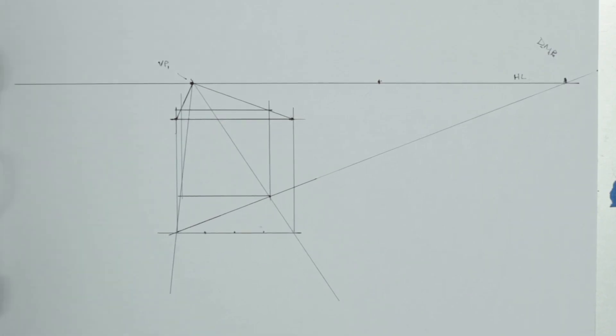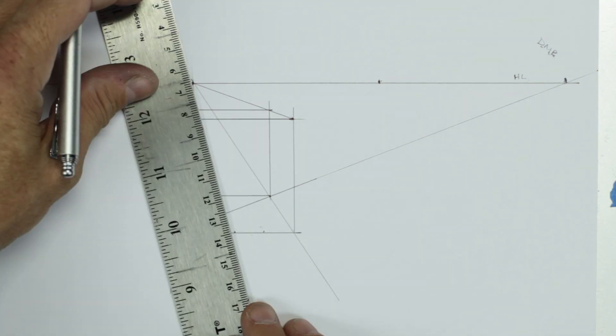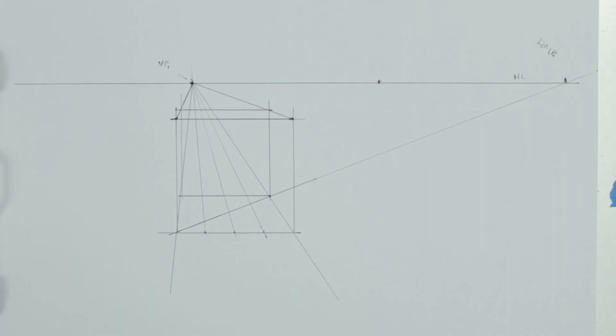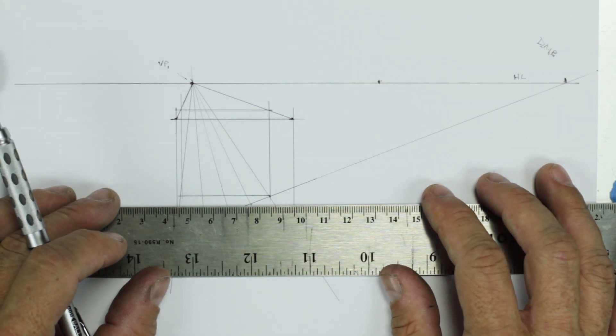The next thing I want to do is I want to take these three points here and run those back into space to our vanishing point. Very lightly. We're going to have a lot of lines drawn here. And where they cross over this diagonal, I'm going to run a horizontal line through the diagonal.